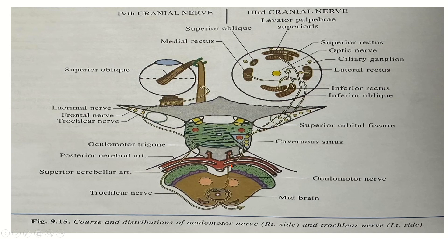The nerve then passes between the posterior cerebral artery and superior cerebellar artery. It pierces the oculomotor trigone and passes in relation to the lateral wall of the cavernous sinus. At the anterior part of the cavernous sinus, it divides into superior and inferior divisions. Both divisions pass through the common tendinous ring of Zinn, separated by the nasociliary nerve. The branch to the inferior oblique provides a communicating branch to the ciliary ganglion.